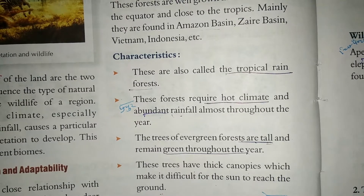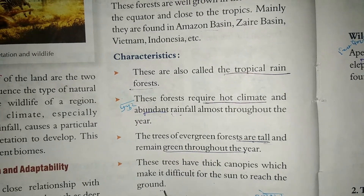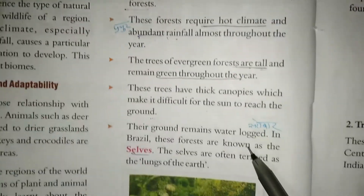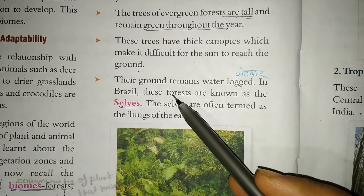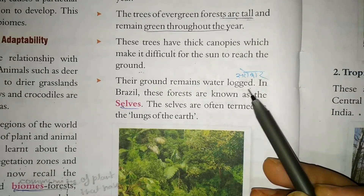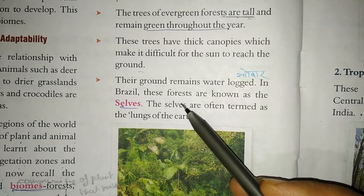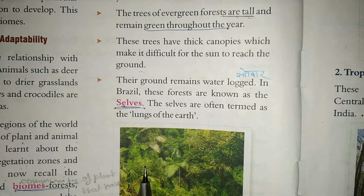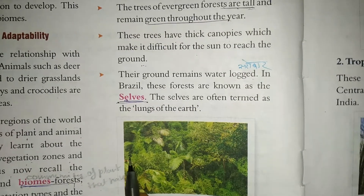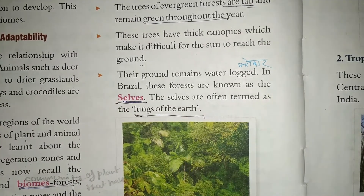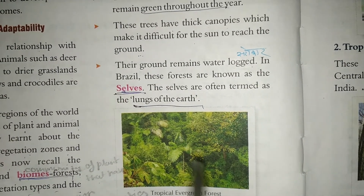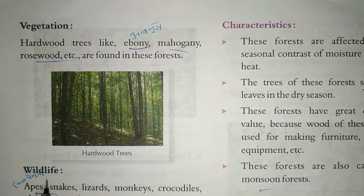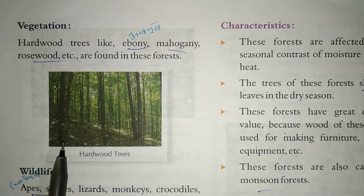These trees have a thick canopy which makes it difficult for the sun to reach the ground, so the ground remains moist. In Brazil, this kind of forest is called 'selva.' Selvas are often termed the lungs of the earth. This completes our overview of tropical evergreen forests.